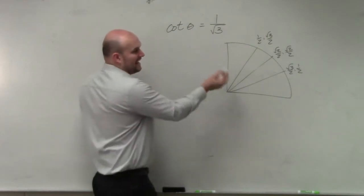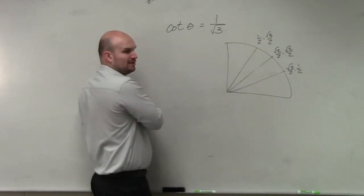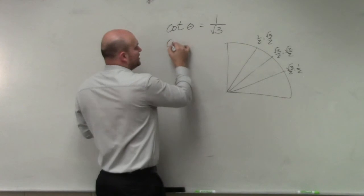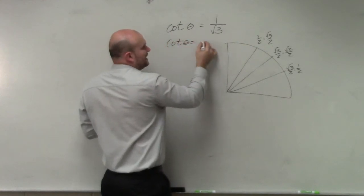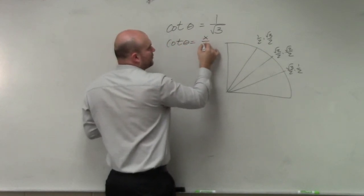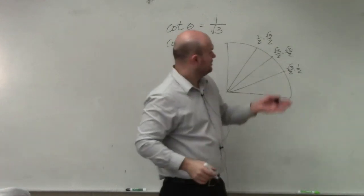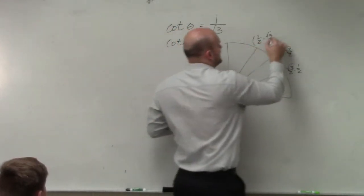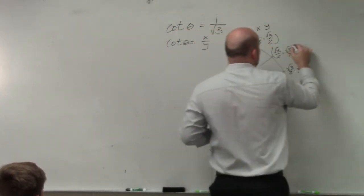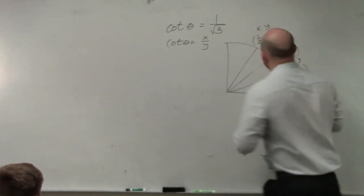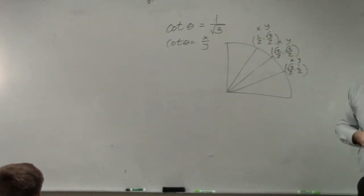So they're saying, what angle produces the cotangent of 1/√3? Remember, cotangent of any angle on the unit circle is your x over y. So when I have an x-coordinate over a y-coordinate, which of these would simplify to give me 1/√3?